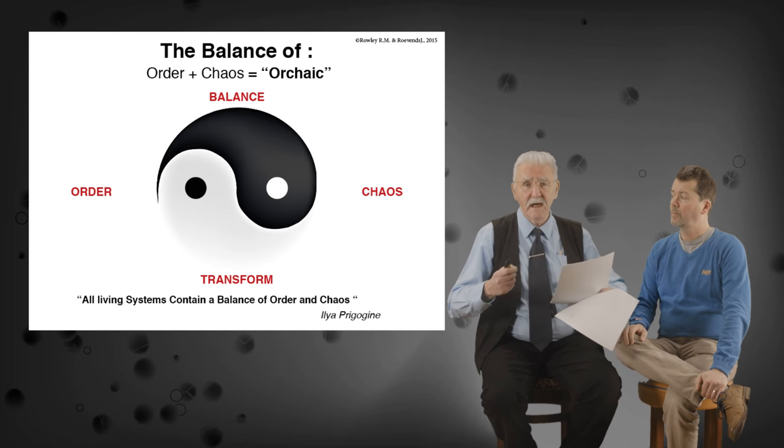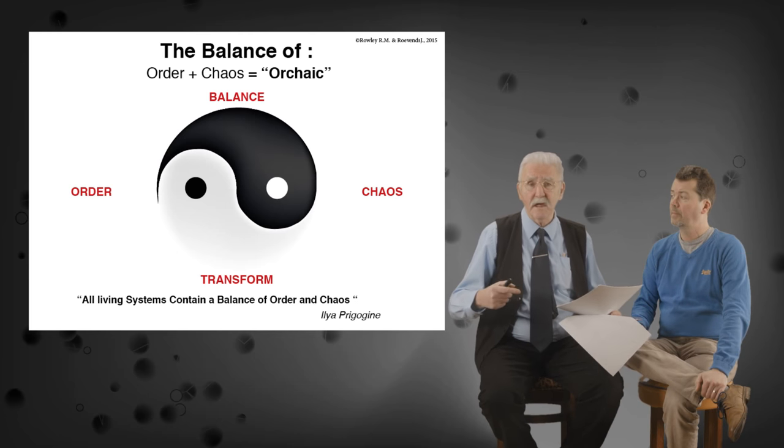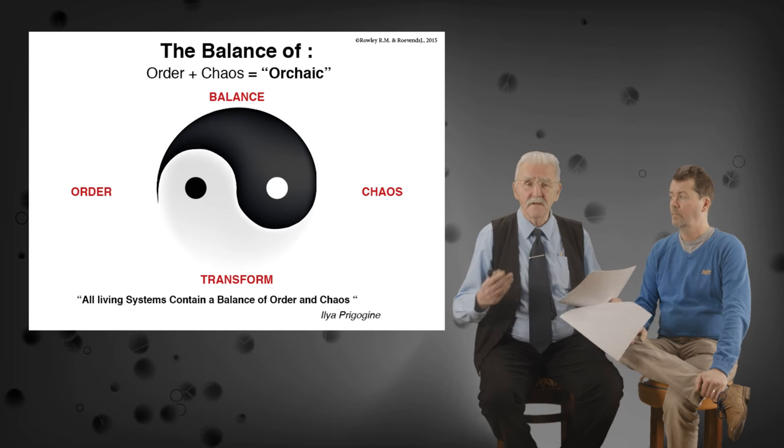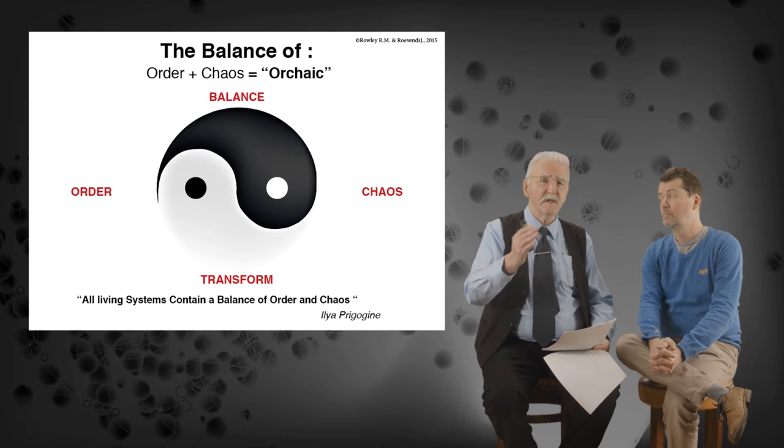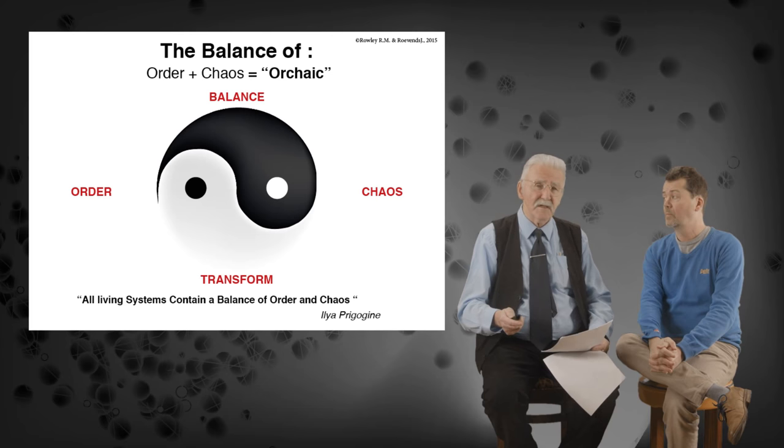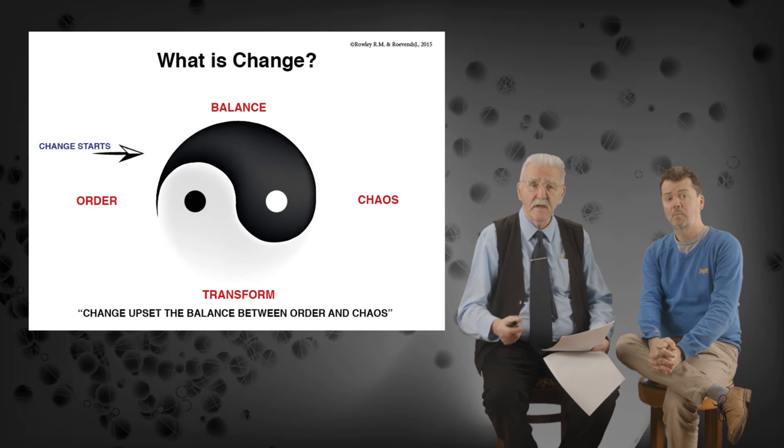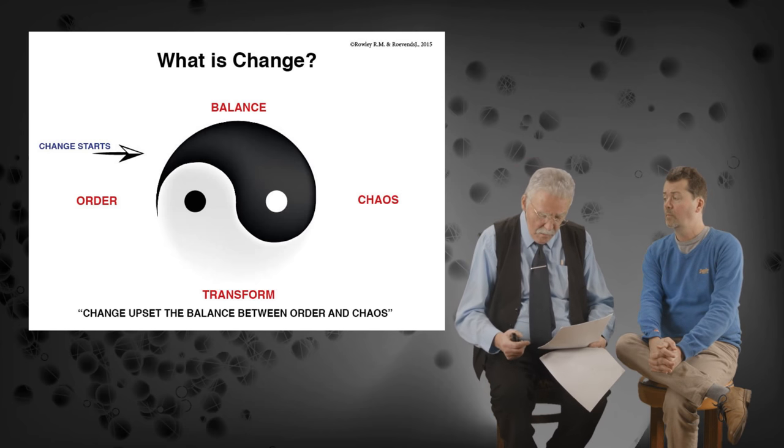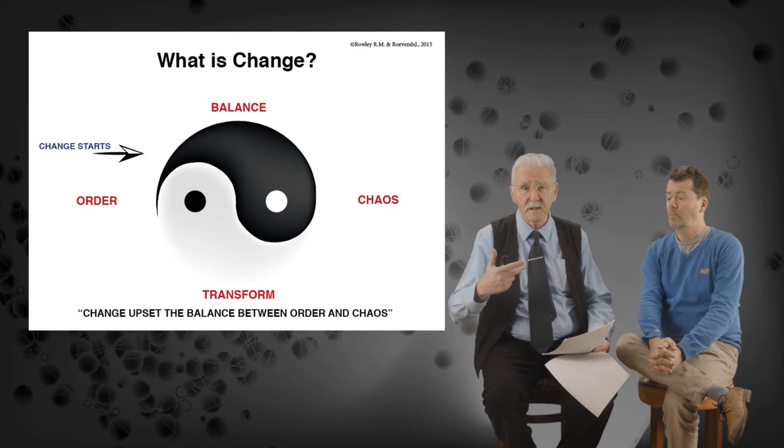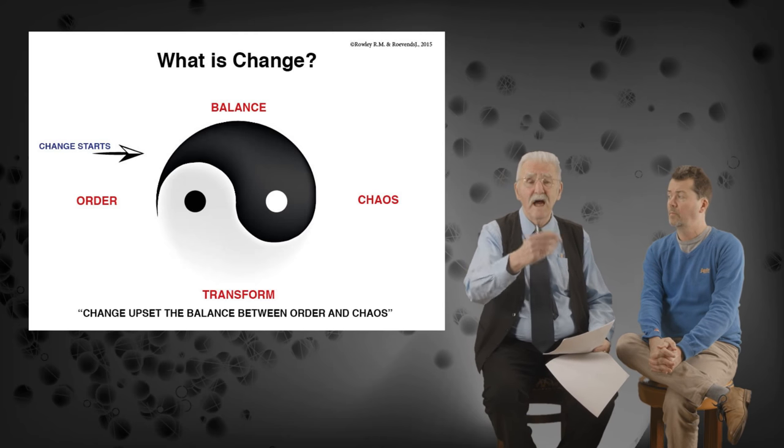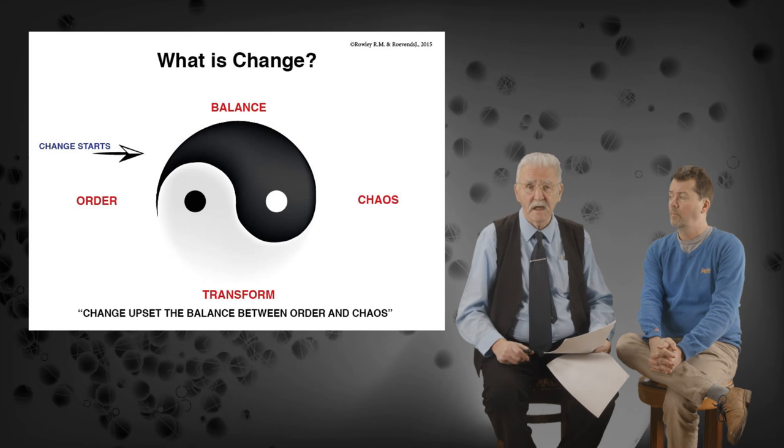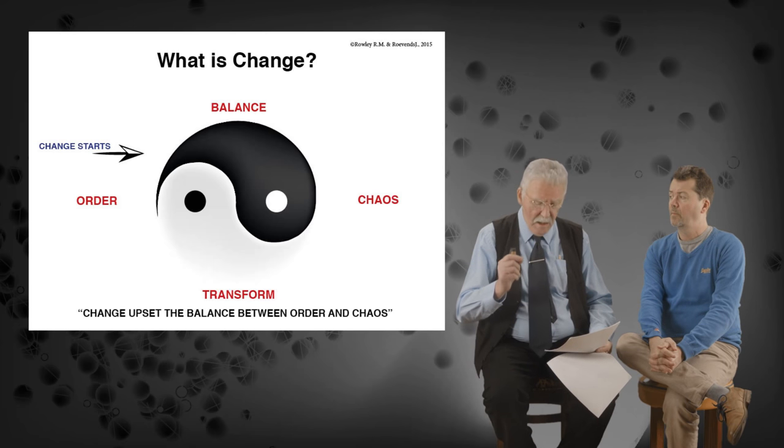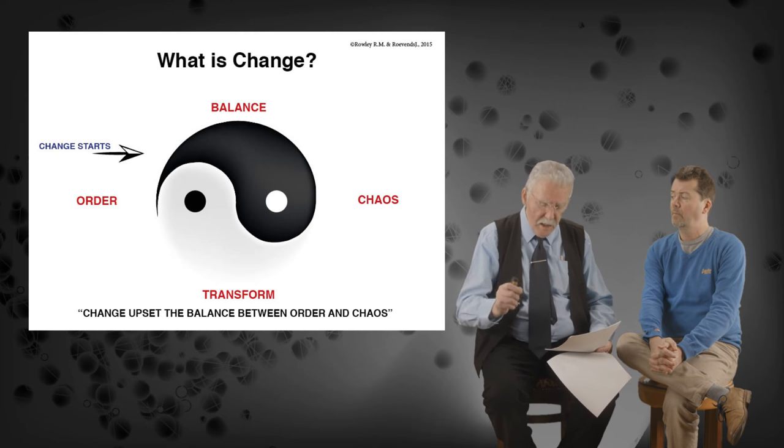If you don't consider chaos, it's like looking at an airplane and saying which is more important, the left wing or the right wing. The two things go together. We're dealing with a balance between order and chaos. Change then is where you upset that balance. You push the system, or the environment changes to push the system from an ordered state into a state of chaos or vice versa. Change upsets the balance between order and chaos.